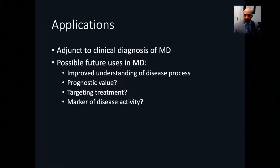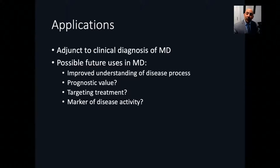Clinical applications are limited at this moment. The only legitimate current application is as an adjunct to a clinical diagnosis of Meniere's, since the literature is predominantly backwards-looking. However, there is excitement for what the future may hold: it may improve our understanding of disease process, have prognostic value in patients with Meniere's-like symptoms without full criteria, help identify different imaging phenotypes reflecting different disease processes to target treatments, and provide a marker of disease activity.